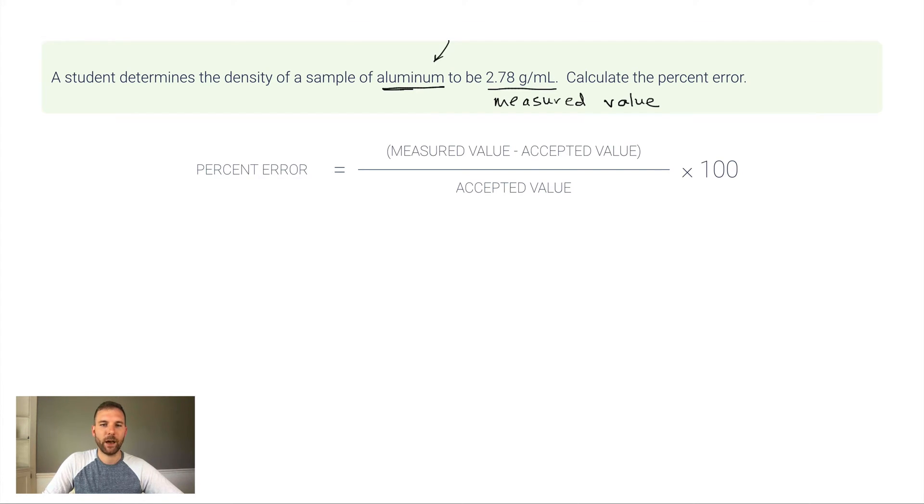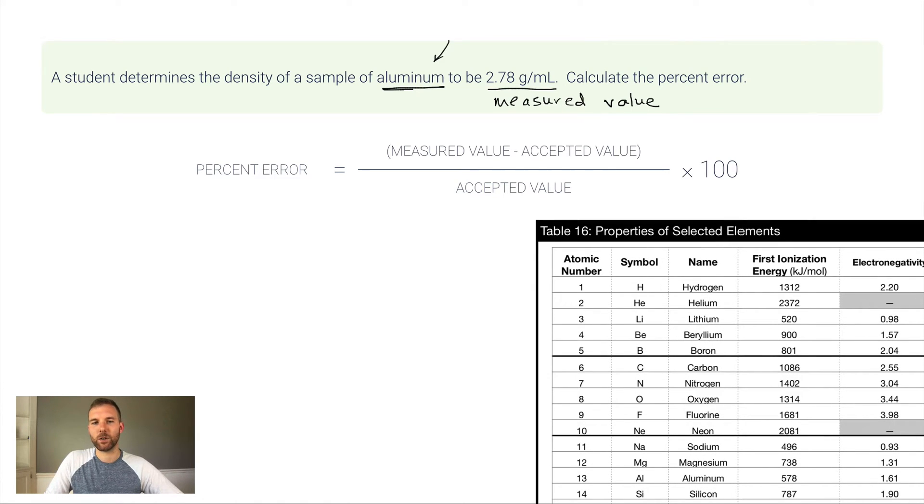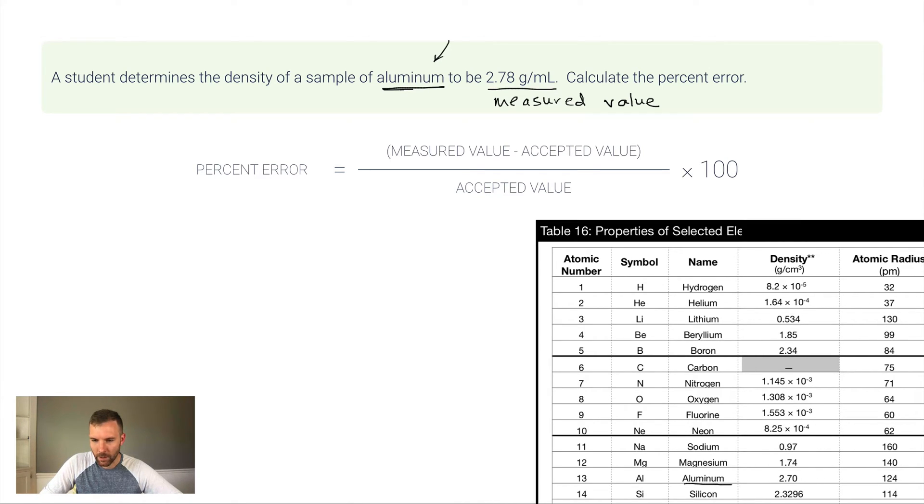Here's the equation: measured value minus accepted value, divided by accepted value. For aluminum, we need to know what the accepted value is. In our class, that means consulting Table 16, which lists properties of selected elements. We look at aluminum—aluminum's density is 2.70. That's the value we'll use for accepted value.